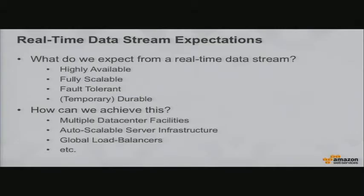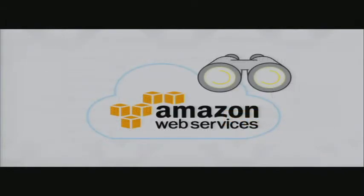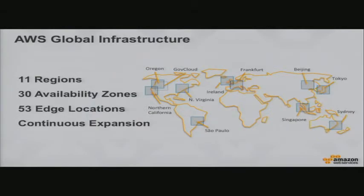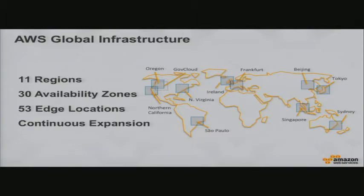At large scale you need many data centers, server infrastructure that scales quickly, and possibly a global load balancer. That's a lot of heavy lifting. This is why a cloud service provider like Amazon Web Services is interesting — we provide that global infrastructure for you to consume at any point in time. We have 11 regions across the world and continuously expand, with the latest ones in Frankfurt, Germany and Beijing, China.